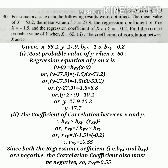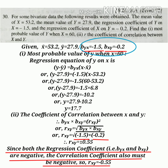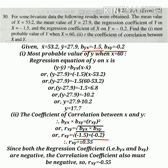Now for the second part of this problem, we will calculate the correlation coefficient between x and y. Using rxy = √(byx × bxy), we put in the values of byx and bxy and get rxy = 0.55. However, since both regression coefficients byx and bxy are negative, the correlation coefficient must also be negative. Therefore the value of rxy = −0.55.